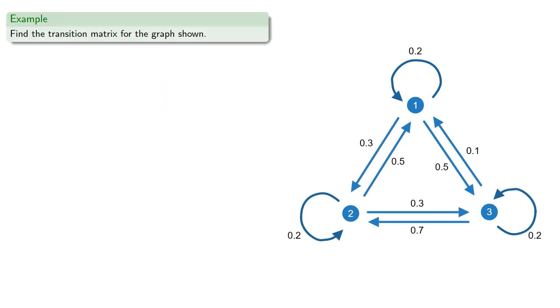For example, we might try to find the transition matrix for the graph shown. So there are three states, 1, 2, and 3, so our transition matrix will be a 3 by 3 matrix.